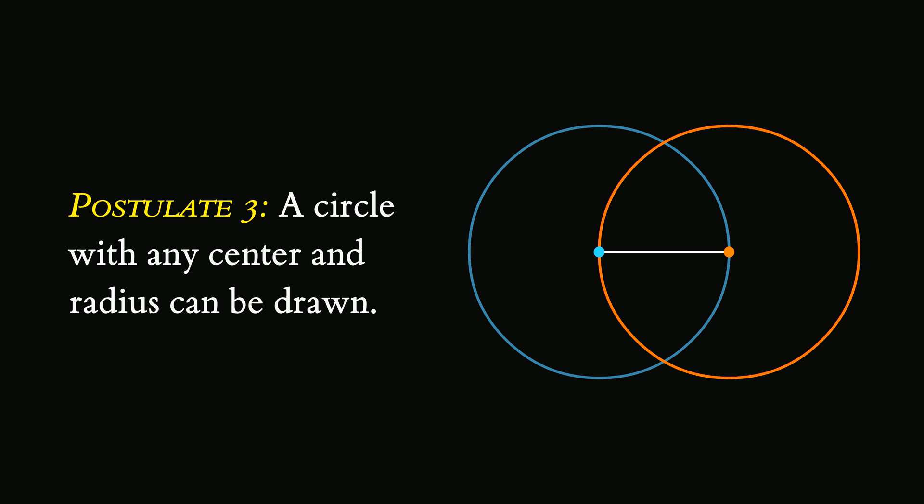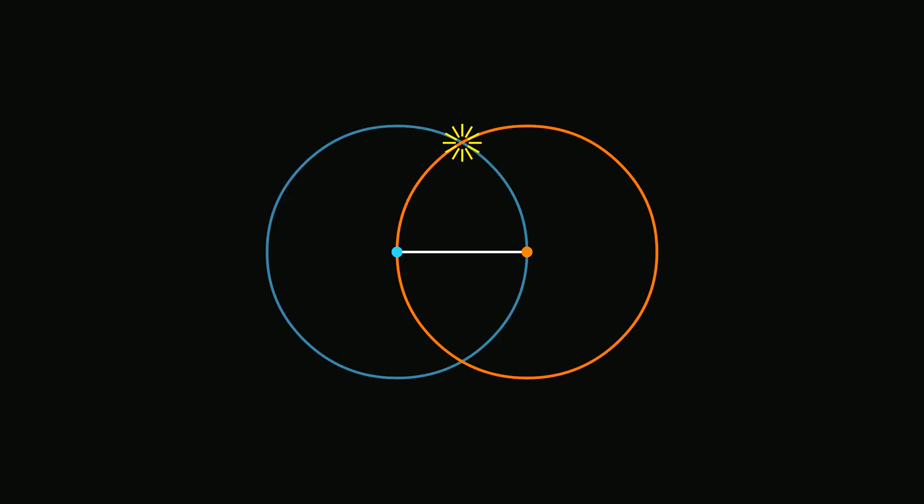So, when we say that the two circles intersect, that's just an assumption. There's no mathematical justification at all. This is where Euclid's proof fails.